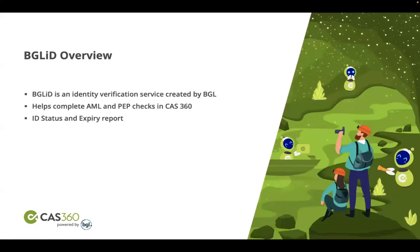I will also be taking you through BGL ID. BGL ID is an identity verification service that has been created by BGL for all our clients, and it is available within CAS360 itself. You can complete your AML by doing ID verification of your clients - passport, driver's license, and so on. We also provide a report so you can check the status of all your clients in terms of verification, and there is an expiry report as well.